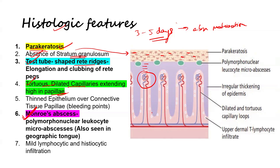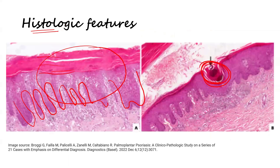Another important histopathological feature is the Munro's abscess, which is a collection of polymorphonuclear leukocytes forming micro-abscesses in the stratum corneum. In the enlarged view of the stratum corneum, you can see these collections of polymorphonuclear leukocytes, which are given the name Munro's abscess.